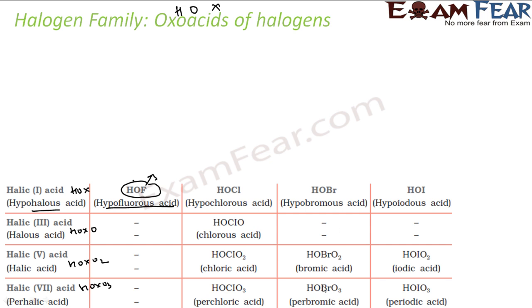Other halogens form several oxa acids. For example, chlorine forms: hypochlorous acid (HOCl), chlorous acid (HOClO), chloric acid (HOClO2), and perchloric acid (HOClO3). Bromine forms: hypobromous acid (HOBr), bromous acid (HOBrO), bromic acid (HOBrO2), and perbromic acid (HOBrO3). Similarly, iodine forms hypoiodous acid (HOI). These oxa acids are stable only in aqueous solution or in the form of salts.